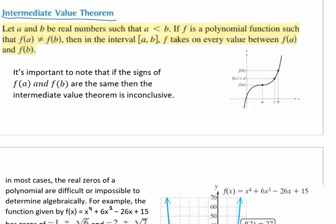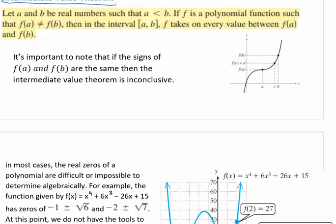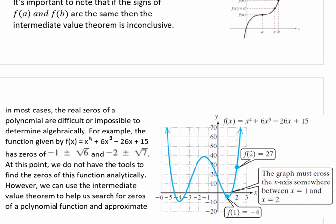So why is this useful? Well, in most cases, the real zeros of a polynomial are difficult or impossible to determine algebraically. For example, the function f(x) = x⁴ + 6x³ - 26x + 15 has zeros at -1 ± √6 and -2 ± √7.